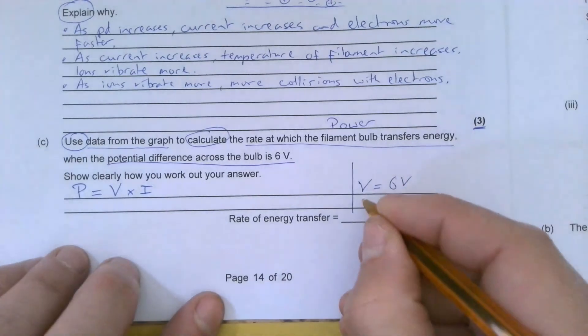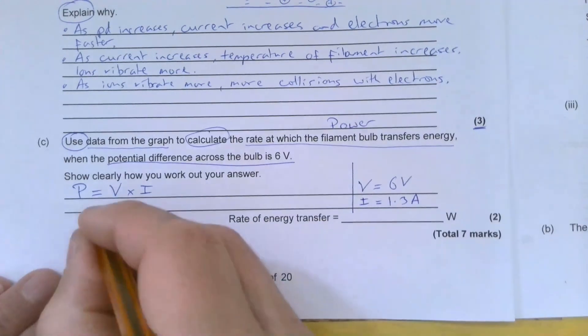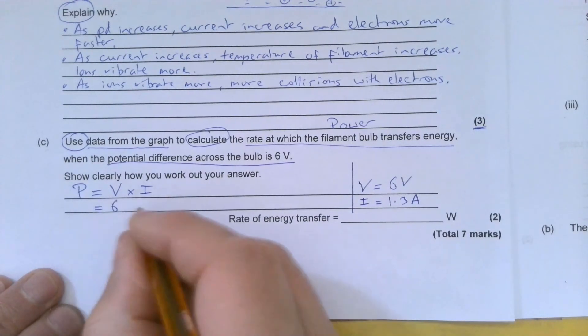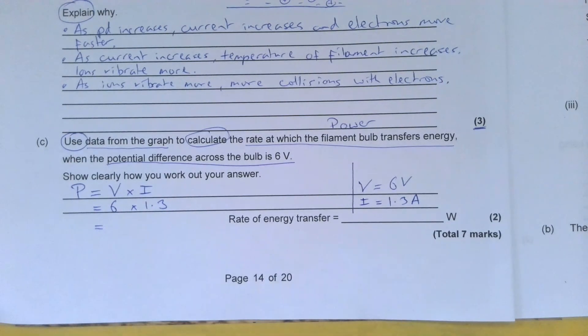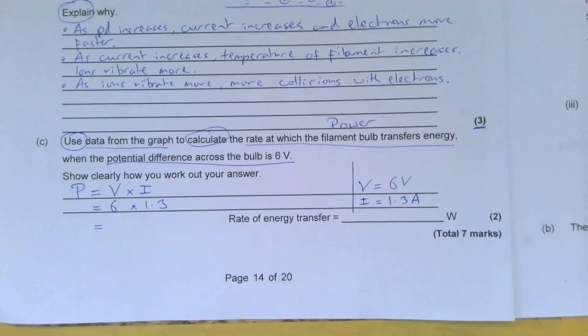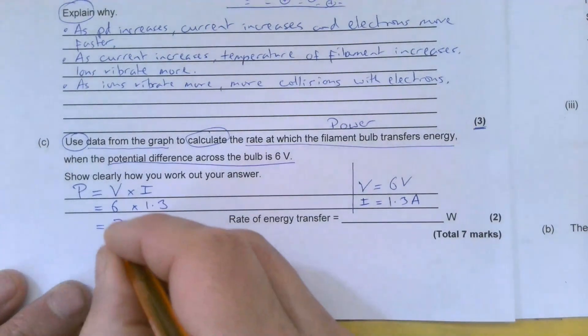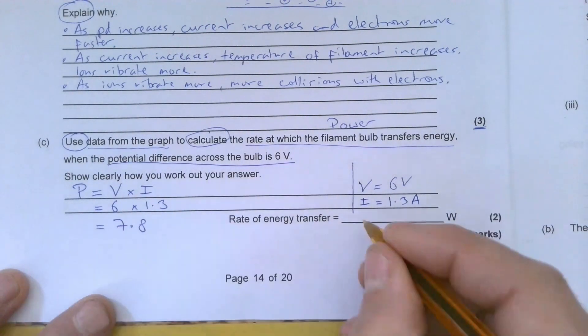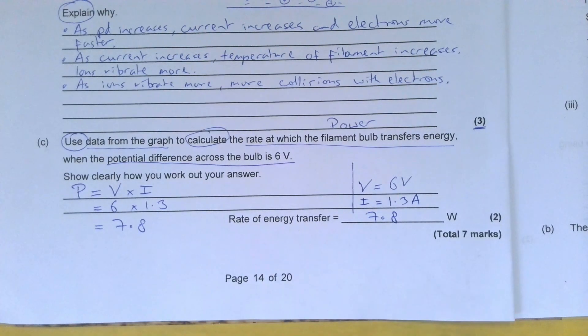So I'm going to pop that in here: 1.3 amps. So the power is 6 times 1.3, which is equal to 7.8 watts. Hope that was useful. Take care, see you soon.